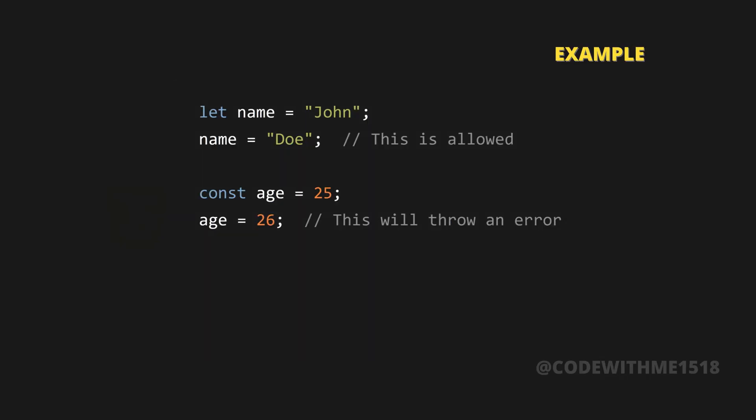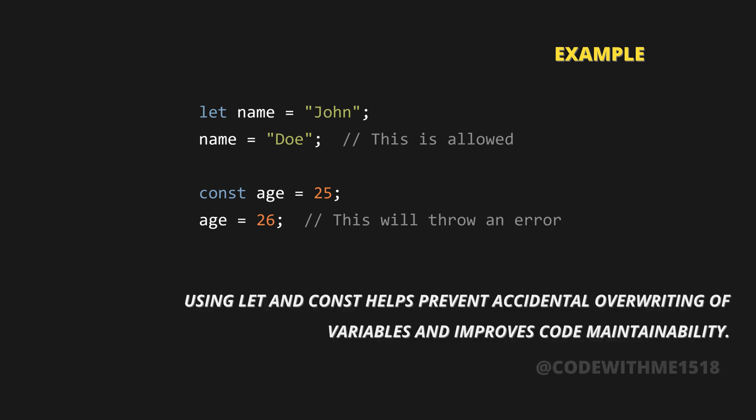For example: let name = 'John'; name = 'Doe'; — this is allowed. Const age = 25; age = 26; — this will throw an error. Using let and const helps prevent accidental overwriting of variables and improves code maintainability.